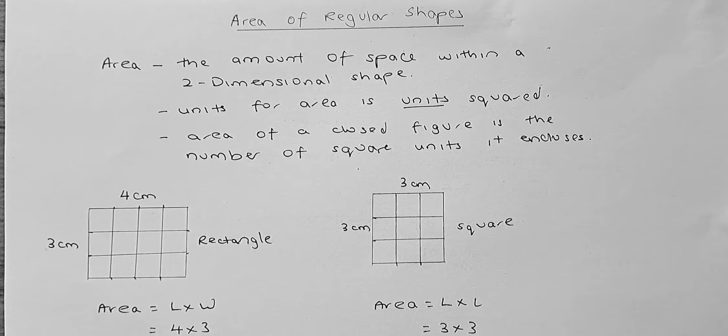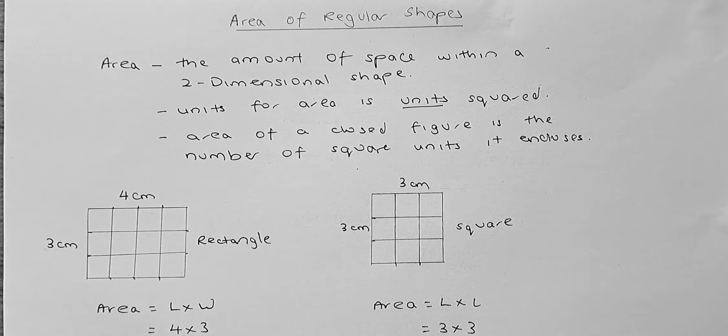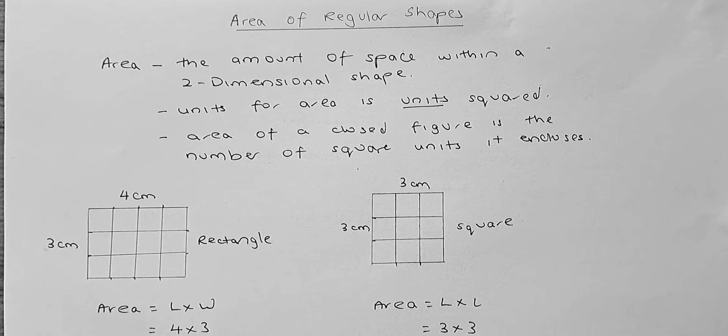The unit for area, including the surface area, is always unit squared. For example, kilometer squared, meter squared, and so on.